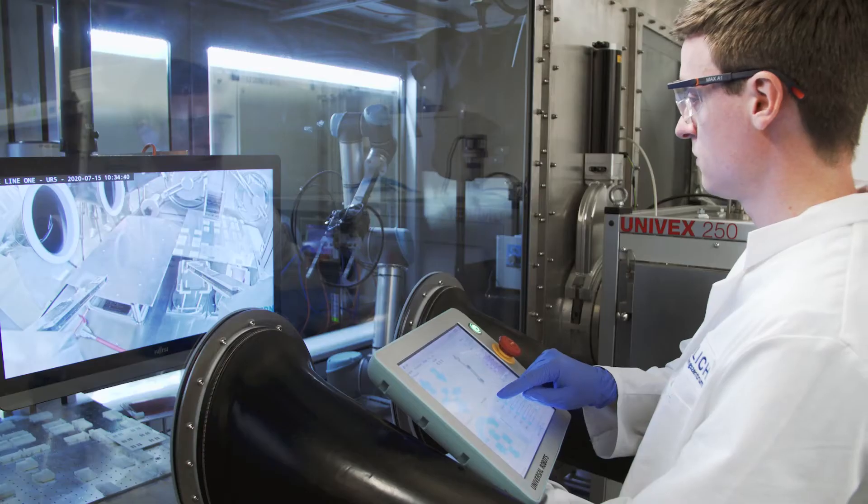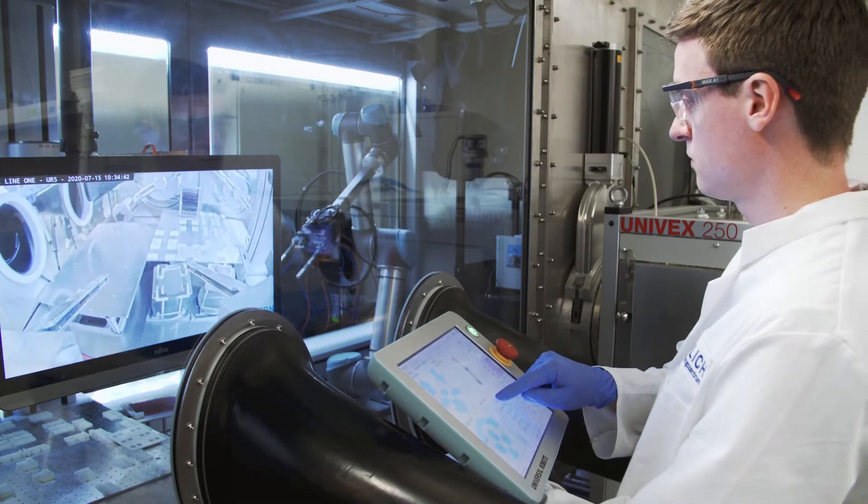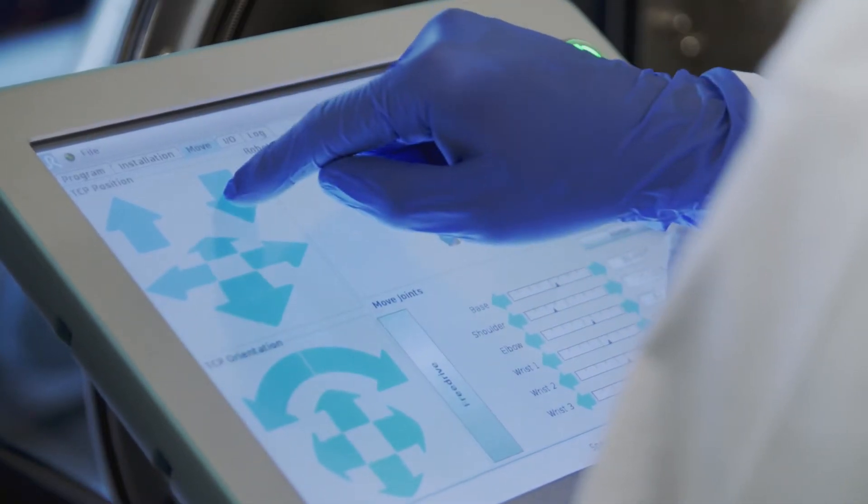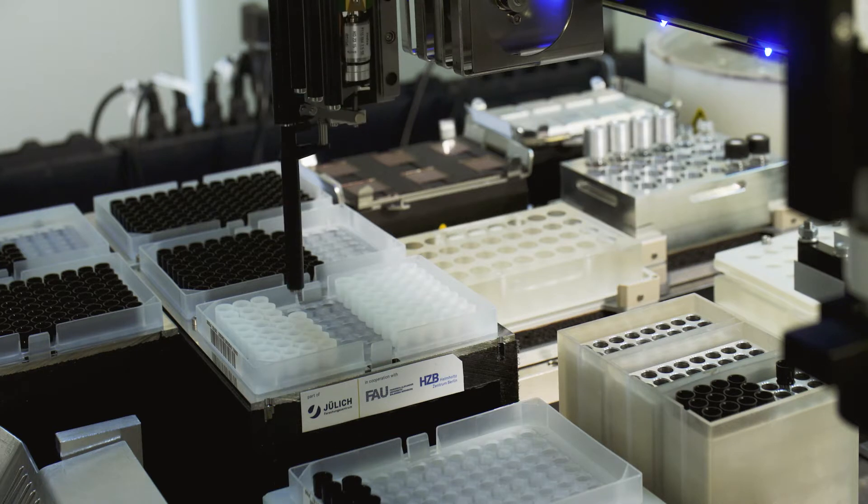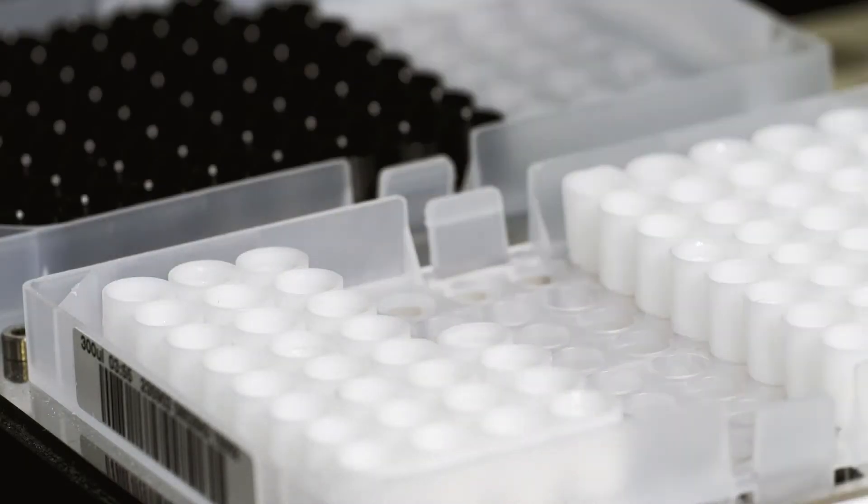The automation of laboratory experiments is challenging. On the one hand, you need to limit the tasks the system can perform in order to automate them. On the other hand, we want to retain as much flexibility as possible. The big advantage of our system is its precision. The robot can perform even complex tasks exactly the same every time.